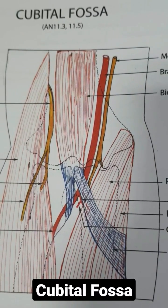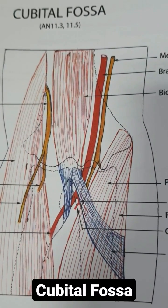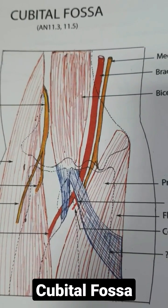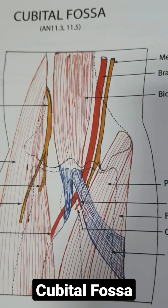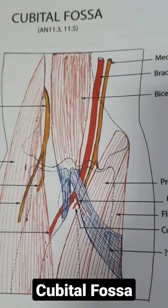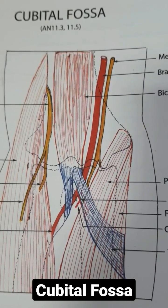Today we are going to learn about the cubital fossa. The cubital fossa is a triangular space situated in front of the elbow joint.